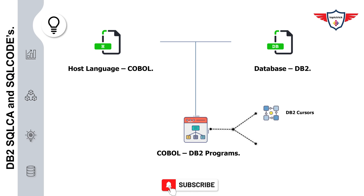A COBOL DB2 program uses embedded SQL statements to access or store data in your DB2 database. When these statements are executed, the output is stored as a result set and can be accessed by an application program with the help of DB2 cursors. In some cases, when using a singleton select statement, the result is returned to the application program via host variables. DB2 also uses SQL return codes to indicate whether execution was successful or failed.